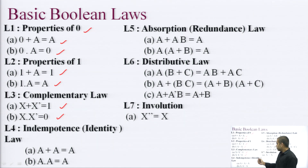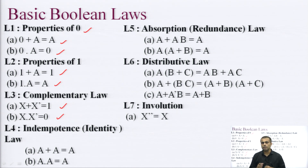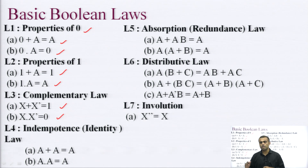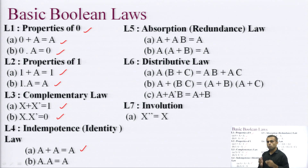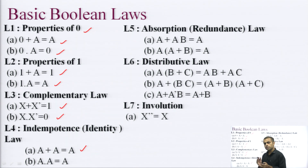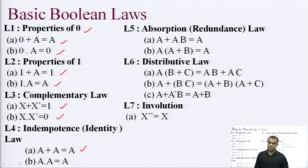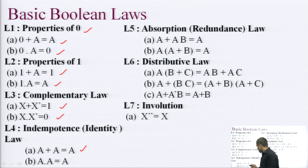The idempotency law states that A plus A equals A — any variable added any number of times gives a sum equivalent to A. This holds because 0 plus 0 plus 0 remains 0, and 1 plus 1 plus 1 remains 1. Similarly, A into A equals A, meaning any variable multiplied any number of times remains equivalent to A.